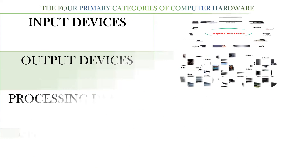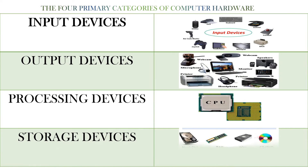Input devices, output devices, processing devices, and storage devices are the four types of computer hardware.